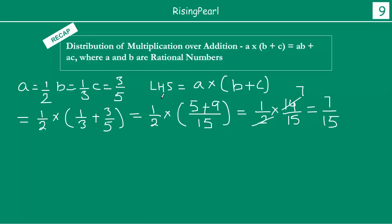So the left hand side value is 7/15. Now let us see the right hand side. The right hand side, which basically shows the distribution of multiplication over addition, is AB plus AC.